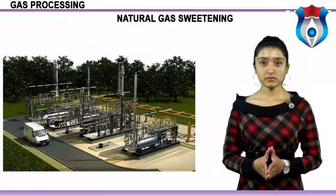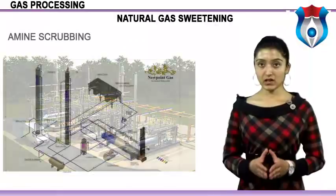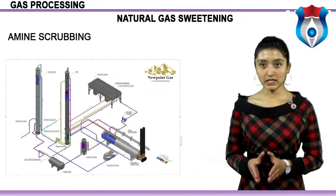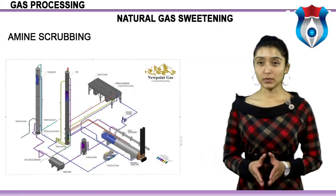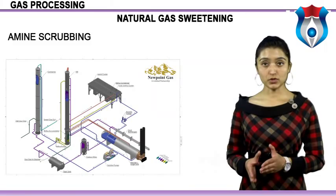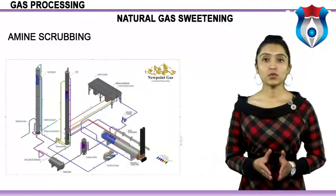The dominant sulfur removal process train includes amine scrubbing, a Claus unit, SCOT-type tail gas treating, and a Bevan-Stratford tail gas system. Amine gas treating refers to a group of processes that use aqueous solutions of various amines to remove H2S, mercaptans, and/or CO2 from gases through absorption and chemical reaction. It is a common unit process used in refineries, petrochemical plants, and natural gas processing plants, also known as acid gas removal and gas sweetening.